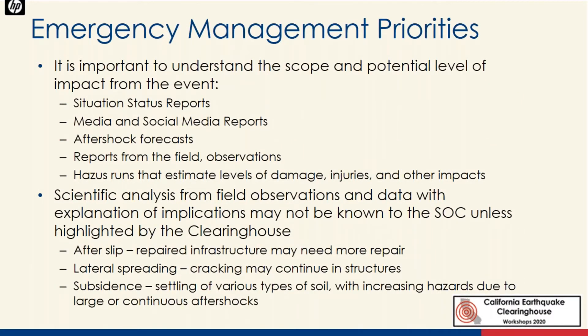Emergency management priorities include understanding the scope and level of impact. At the outset, we need to know how widespread the potential damage is, the level of damage to buildings and structures, whether transportation arteries are passable, and whether there are utility-related fires. Information comes from situation status reports, media and social media reports, aftershock forecasts, field reports, specific observations, and Hazus runs that estimate levels of damage, injuries, and other impacts.